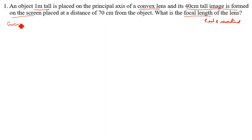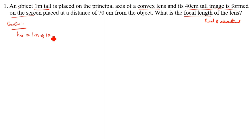What is given? Object height Ho is one meter tall. We need to change it into centimeters, so Ho equals 100 centimeters. We are changing to centimeters because all the other parameters given are also in centimeters.